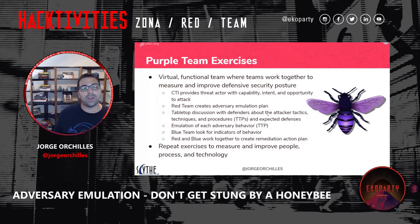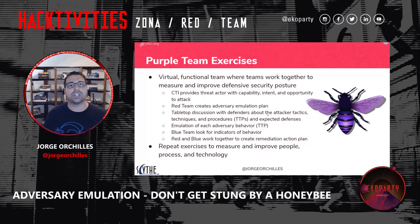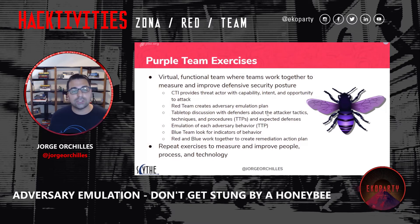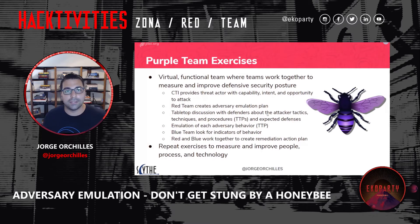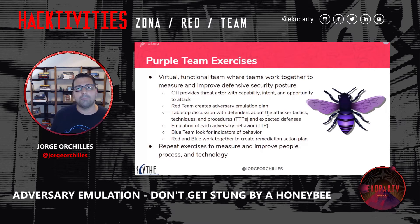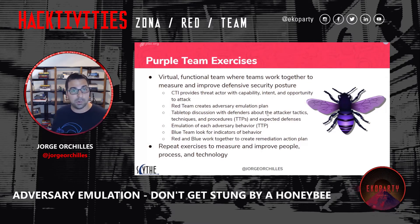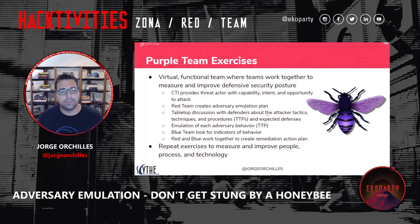The red team will then create an adversary emulation plan — this is what we're going to do, this is what we're going to try to get into this organization. Then in your exercise, you tabletop it: you discuss it among the blue team, the CTI team, and the red team. You say this is one of the TTPs that this actor does — where do you think we have controls? We might have controls on the endpoint, or we use this product on the network. It'll definitely log it, but I don't know if it'll alert.